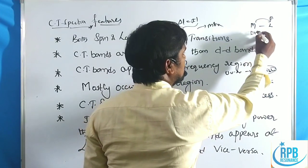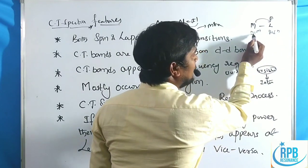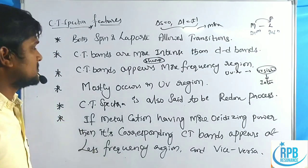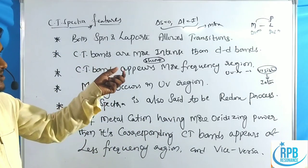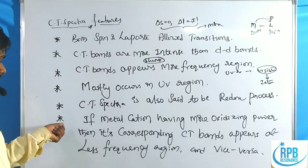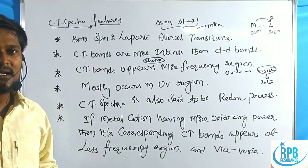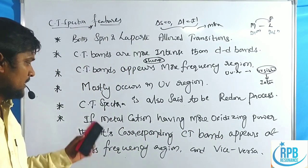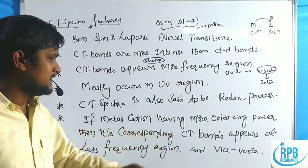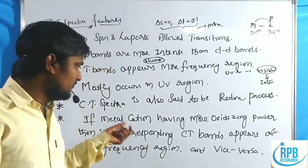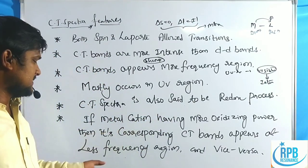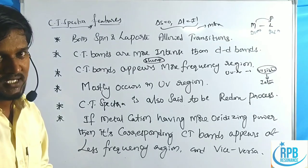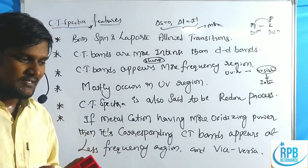CT spectra is also called redox spectra. In ligand to metal or metal to ligand electron transfer, if the metal loses an electron, it is oxidation; if the ligand gains the electron, it is reduction. Both oxidation and reduction take place in a single process - that is a redox process. If the metal cation has more oxidizing power, its corresponding CT bands appear at less frequency. Conversely, less oxidizing power means CT bands appear at higher frequency.